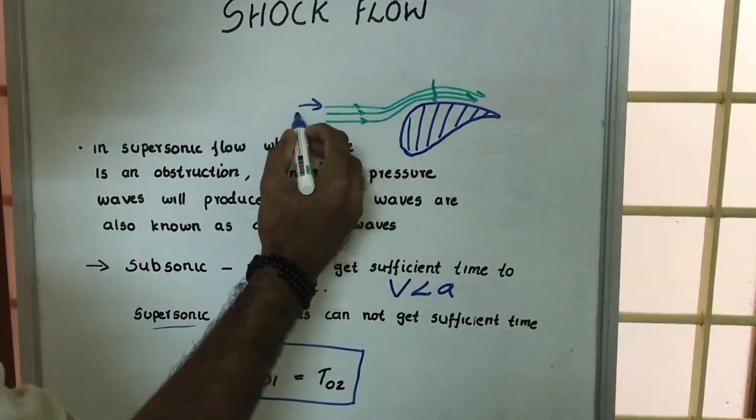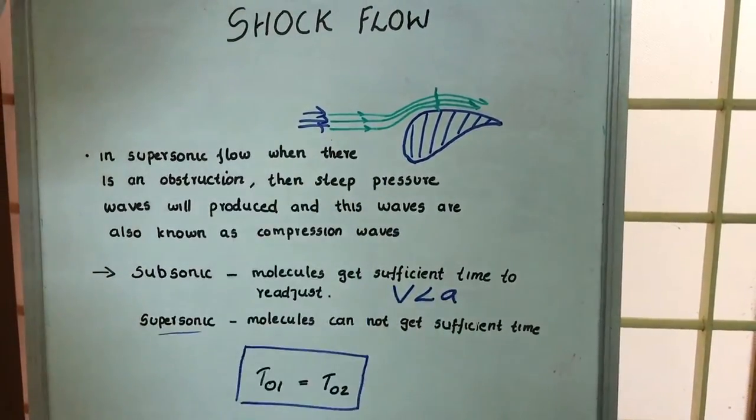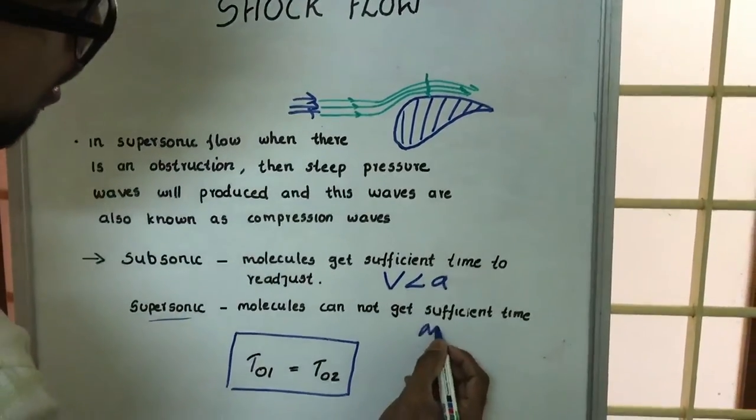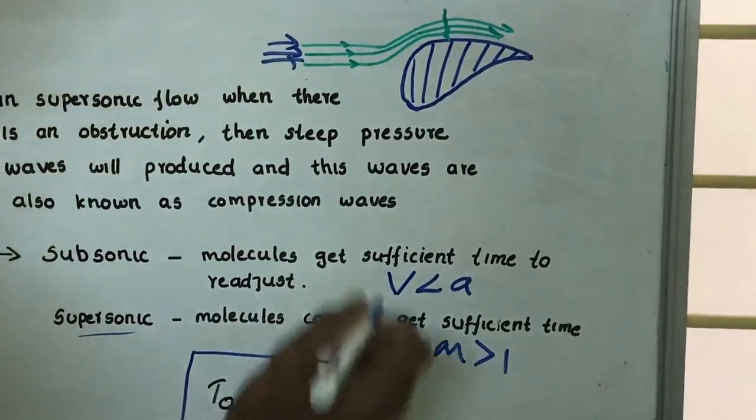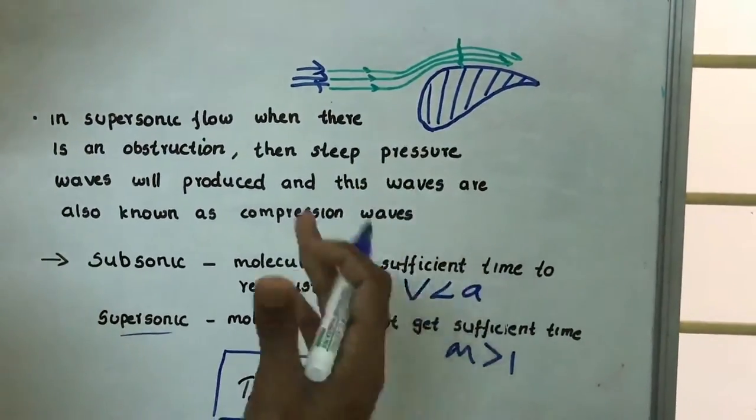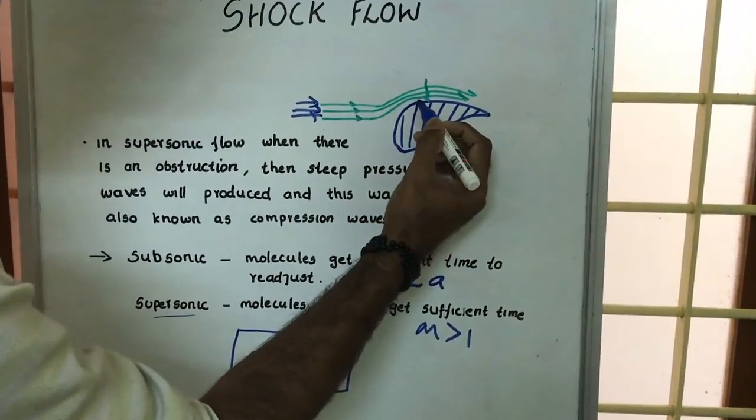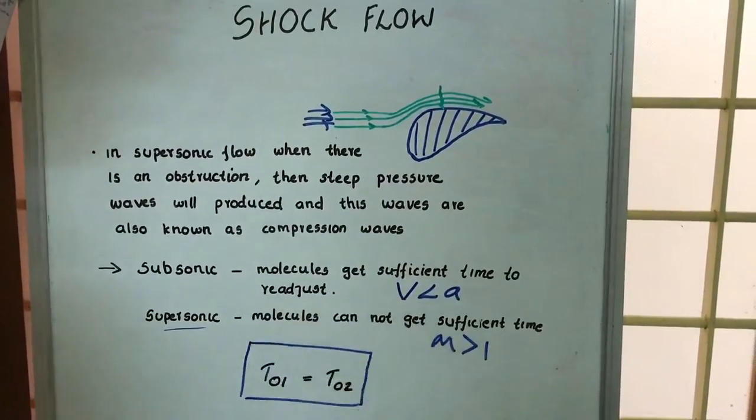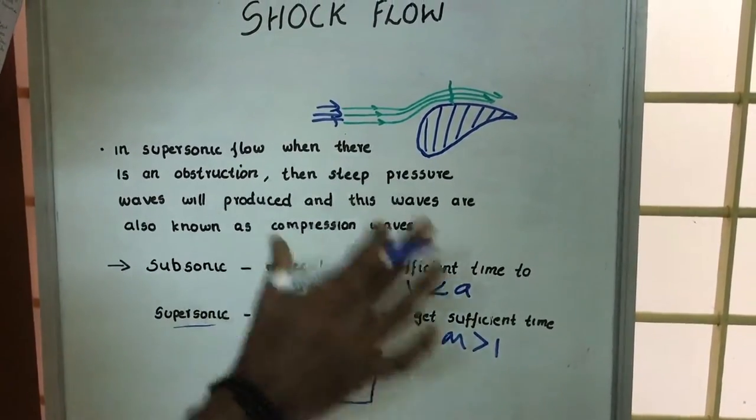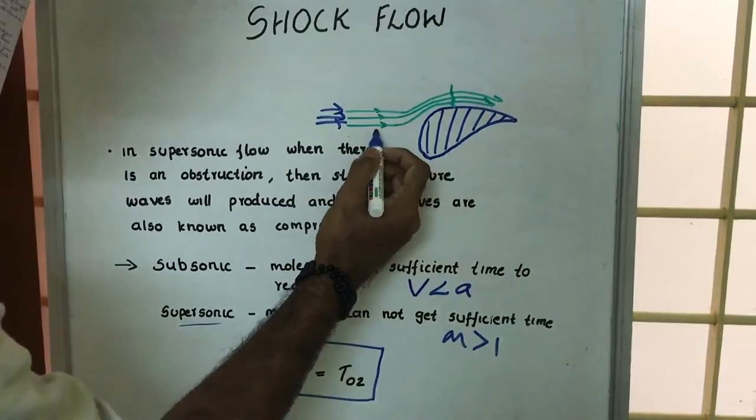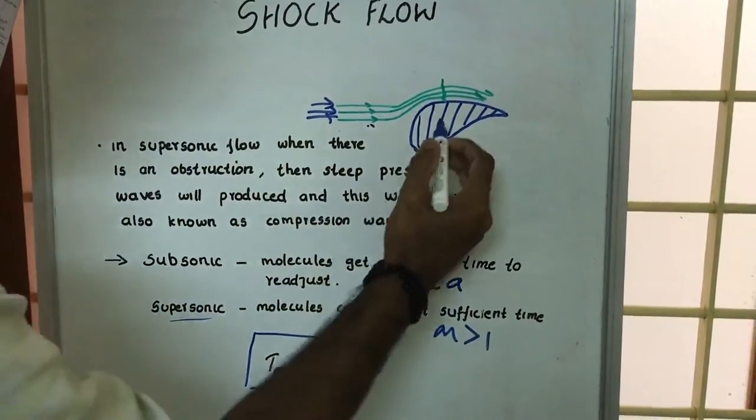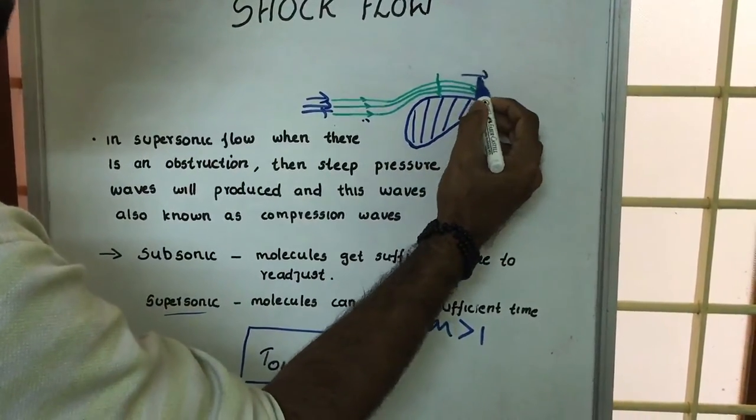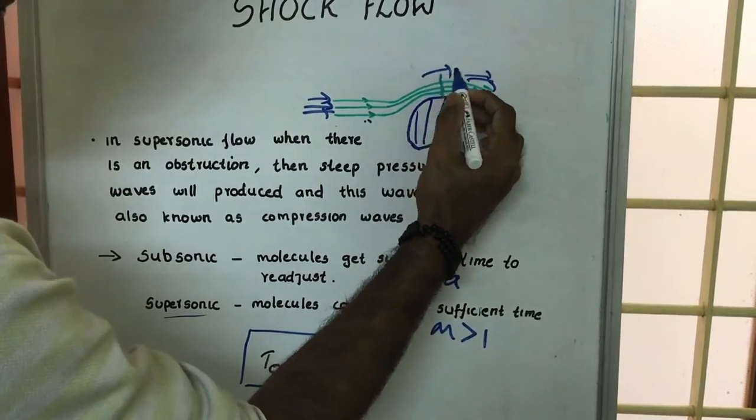They cannot get sufficient time to adjust themselves in this obstruction. In a flow we always try to maintain the equilibrium position, like initial conditions. So if there is an increase in velocity here, you can see there will be an increase in velocity.